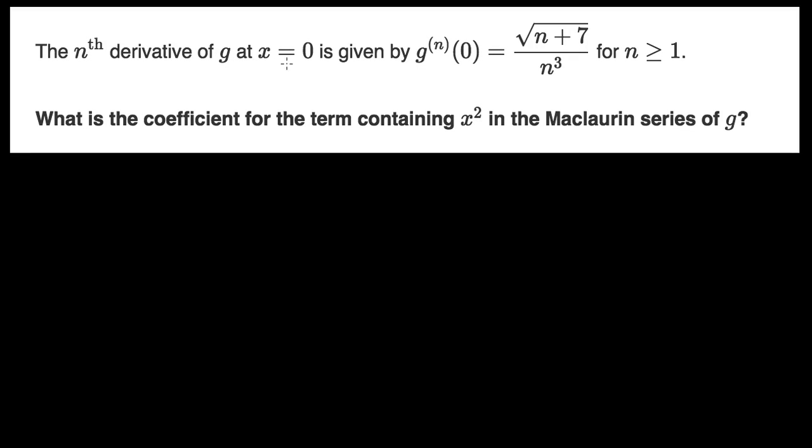The nth derivative of g at x equals zero is given by the square root of n plus seven over n to the third, for n greater than or equal to one. What is the coefficient for the term containing x squared in the Maclaurin series of g?